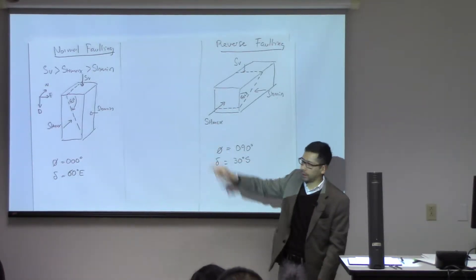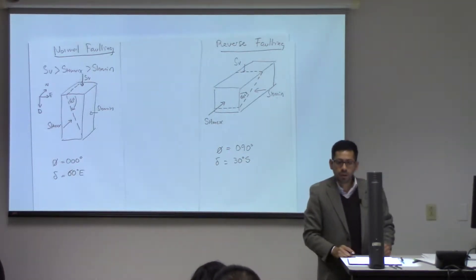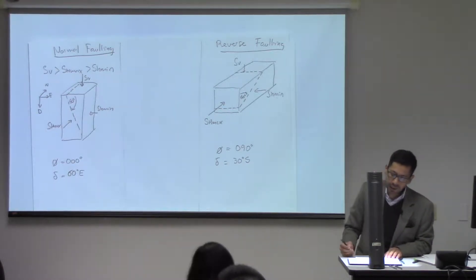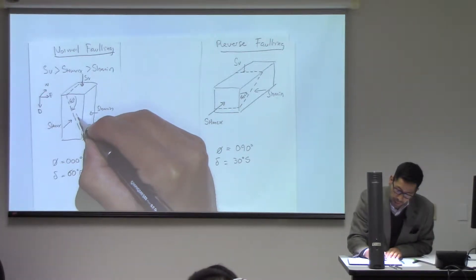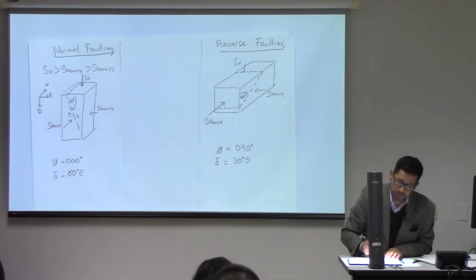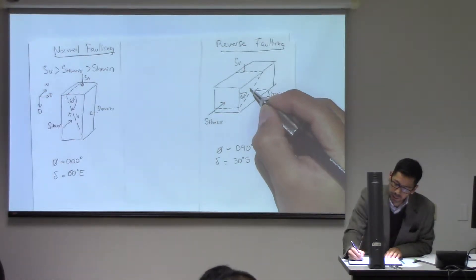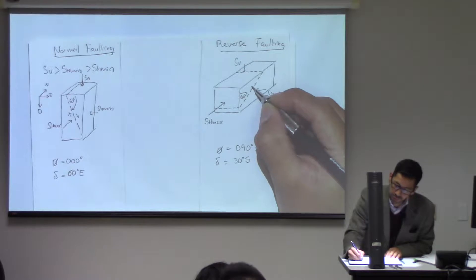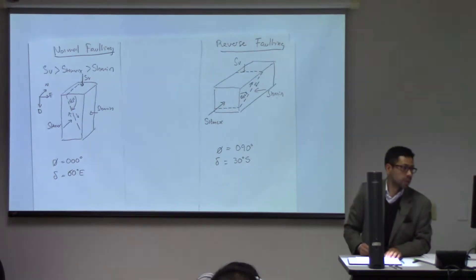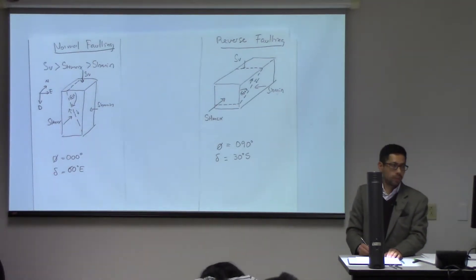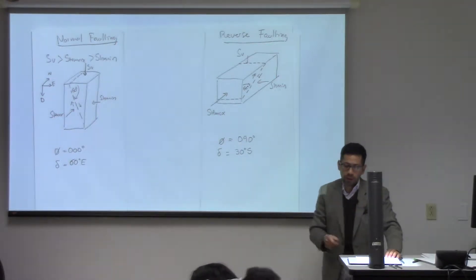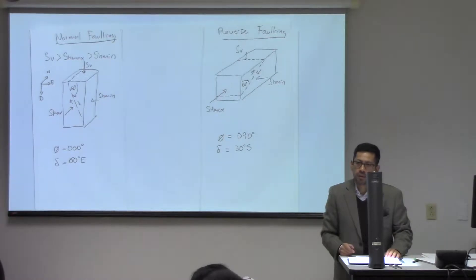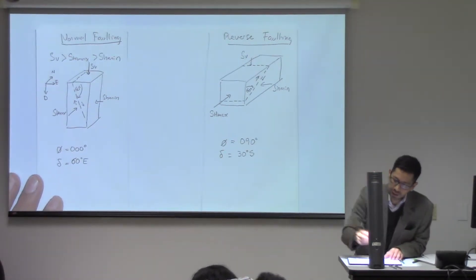In a normal faulting regime, the hanging wall moves down and the foot wall moves up. In the reverse case, the hanging wall moves up and the foot wall moves down. Is that clear? Good, then let's move on.